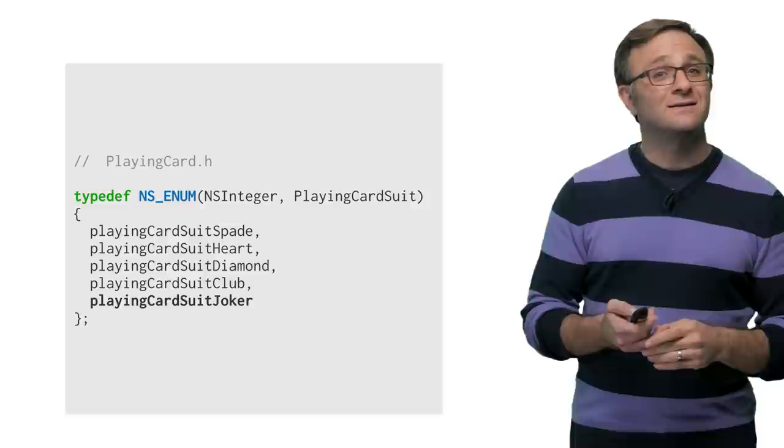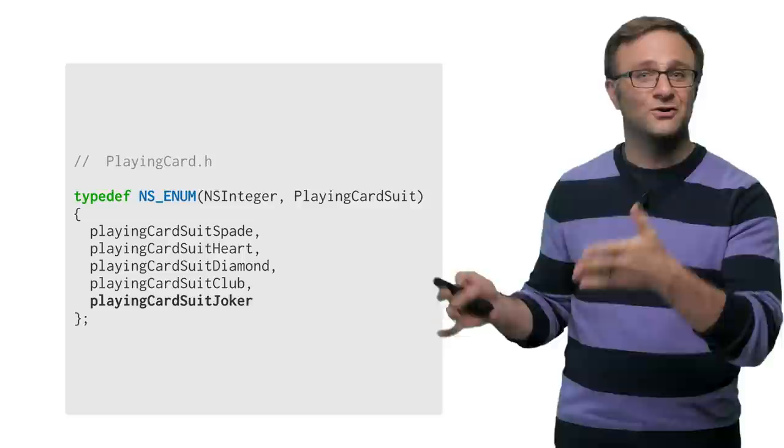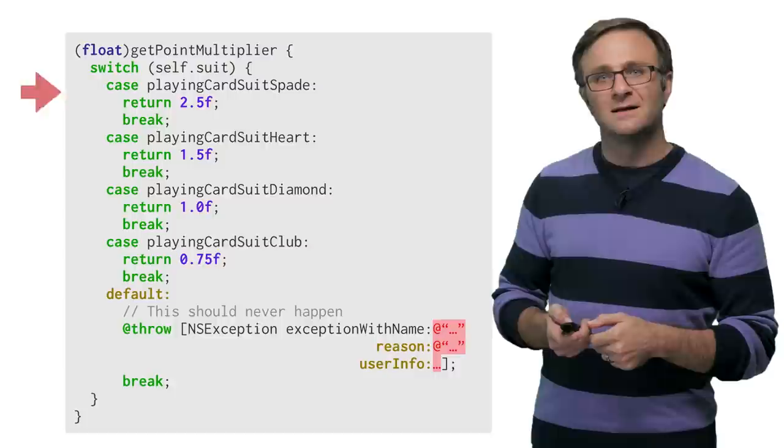Well, jokers are going to need their own suit. And so maybe the engineer assigned to this task, well, they see that we need to add a joker to our enum. But our code base has grown. And maybe our engineer doesn't notice that the getPointMultiplier method, among all of our other code, also needs that enum. So it doesn't get updated.